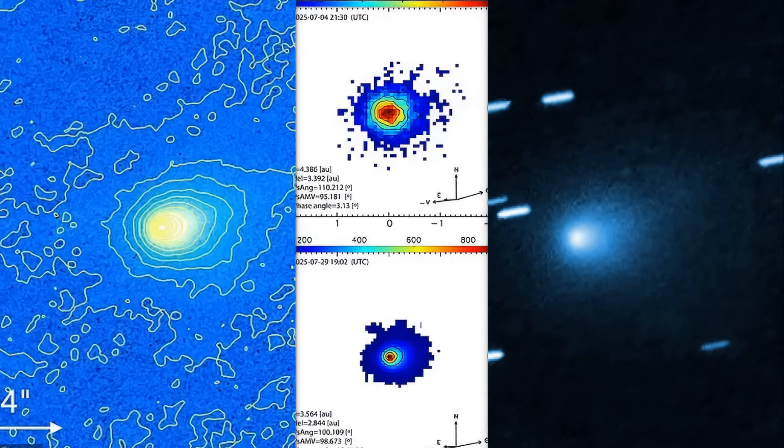And they're pointing at these images, all this data, and saying there is no tail. Instead, it's got an odd glow on the front of it that a comet shouldn't have, that you can see in the right image. So, odd details, indeed, coming out about this thing.